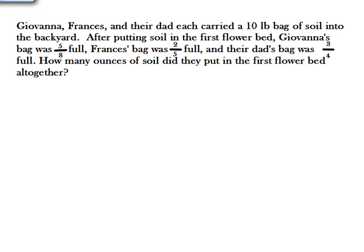Giovanni, Francis, and their dad each carried a ten pound bag of soil into the backyard. After putting soil into the first flower bed, Giovanni's bag was five-eighths full, Francis' bag was two-fifths full, and their dad's bag was three-fourths full. How many ounces of soil did they put into the first flower bed altogether? The first thing that we need to do is set up an RDW for Read, Draw, and Write.